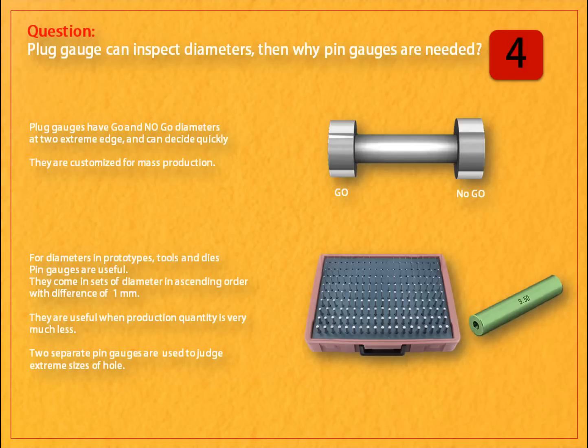Pin gauges come in sets of diameters in ascending order with a difference of 1 mm. They are useful when production quantity is very much less. Two separate pin gauges are used to judge the extreme sizes of a hole.